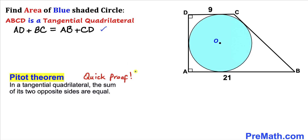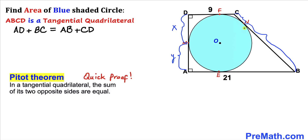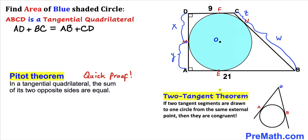Now let me give you a quick proof. Let's assume that points E, F, M, and N are our points of tangency. Let me call line segment DM as x, side length MA as y, side length CN as z, and side length NB as w. Now let's recall the two tangent theorem: if two tangent segments are drawn to one circle from the same external point, then they are congruent.